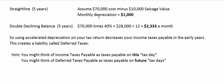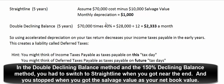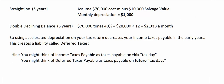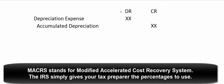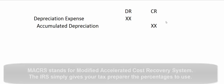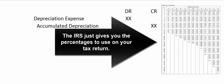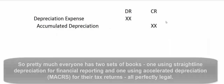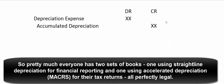Double declining balance and 150% declining balance were complicated — you had to ignore salvage value at first, then switch over to straight-line when straight-line gave you more depreciation expense, and stop before taking more than the residual value. So the IRS came up with the Modified Accelerated Cost Recovery System, which simply tells you what percentages to use for three-year, five-year, seven-year, and other asset classes. It's really just double declining balance or 150% declining balance depending on the asset's useful life. Everyone keeps two sets of books: straight-line for financial records, and MACRS on their tax return.